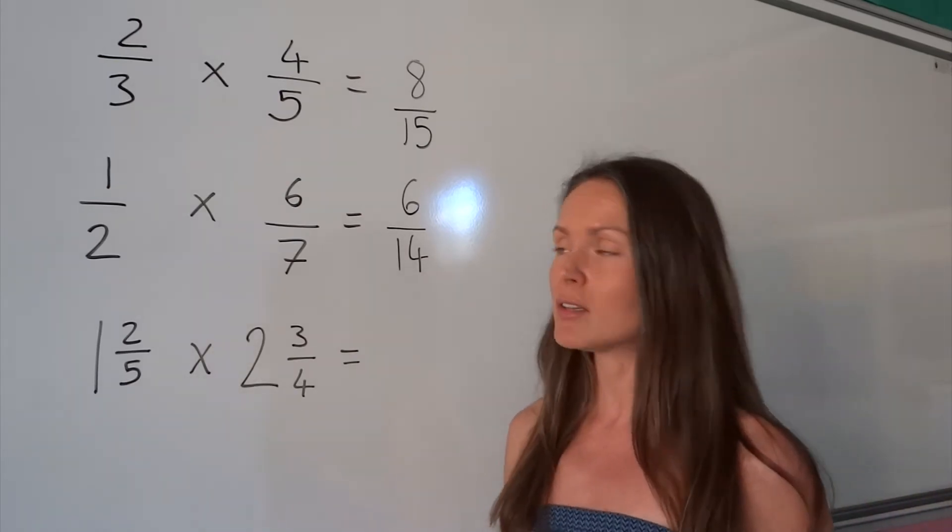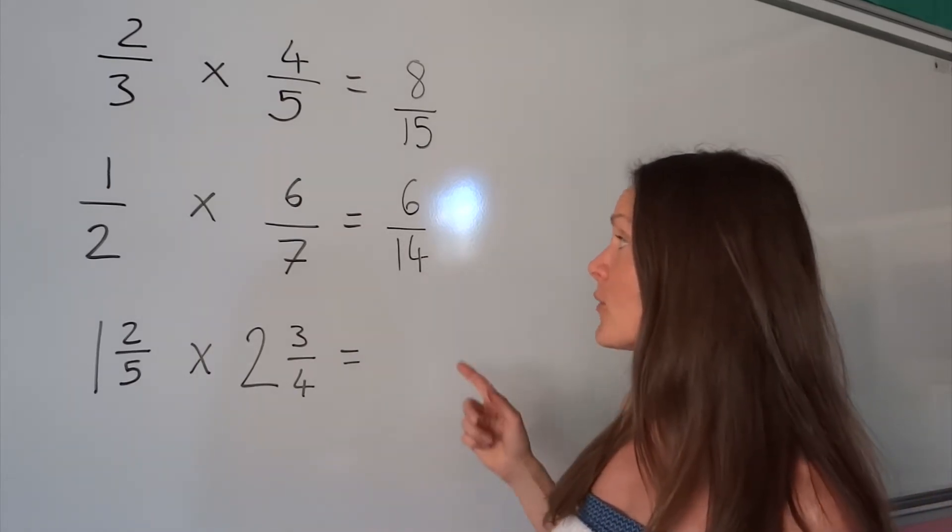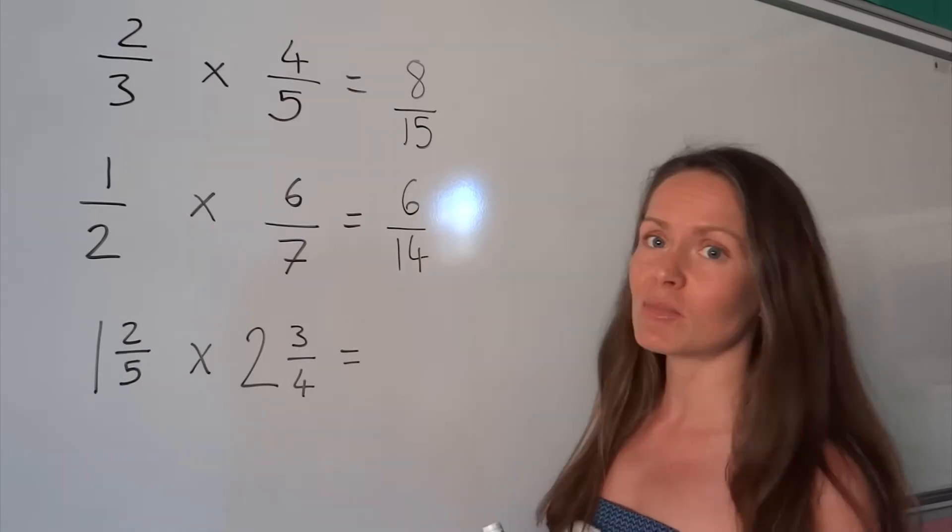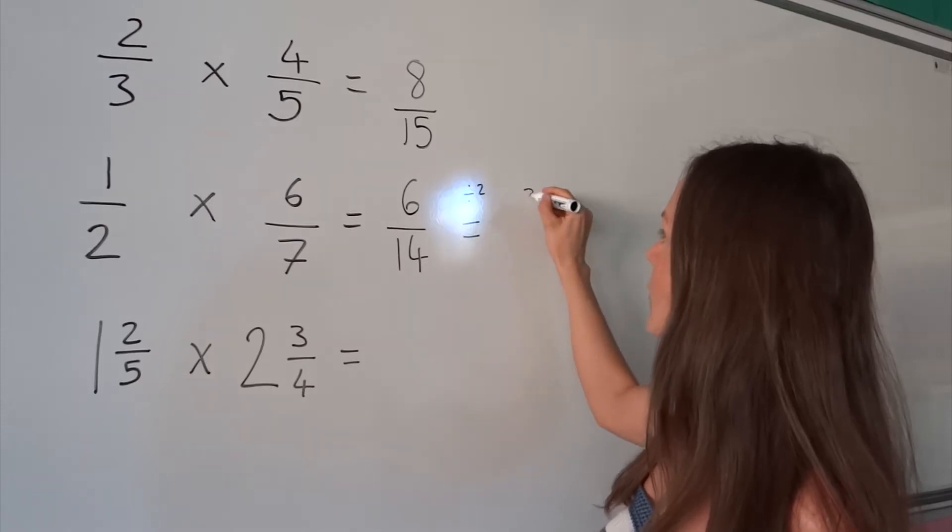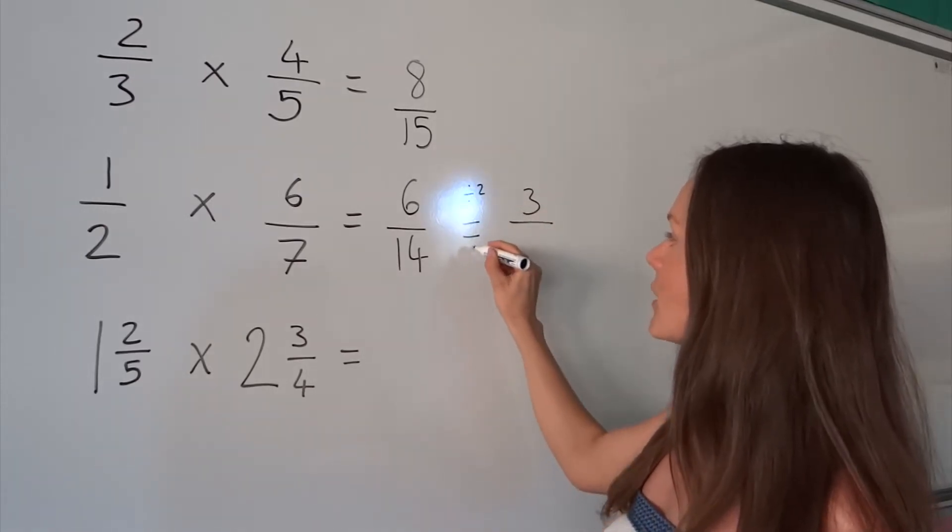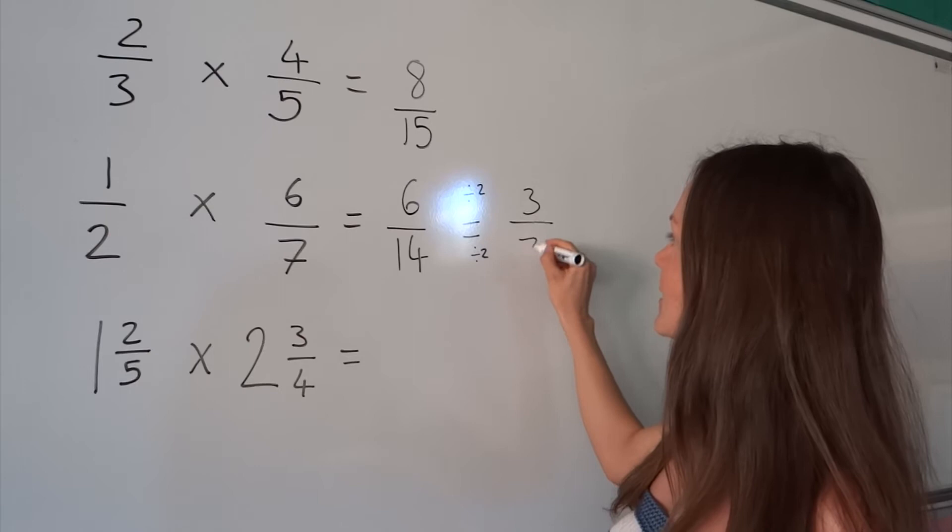However, we can simplify this fraction because there's a common factor. We can divide both of these numbers by 2. So if I divide 6 by 2, I get 3. And if I divide 14 by 2, I get 7.